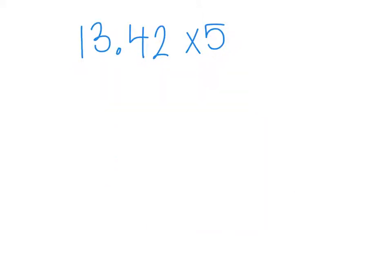In our last example, we have 13 and 42 hundredths times 5. Again, this is written as an expression. We cannot solve this using the standard algorithm when it's written this way. We need to write it out vertically. 13 decimal 42 hundredths times 5.